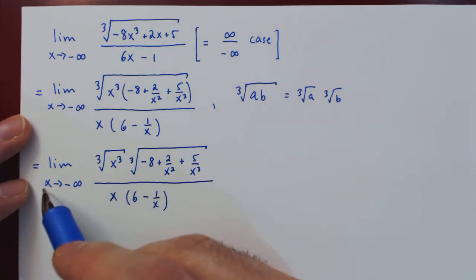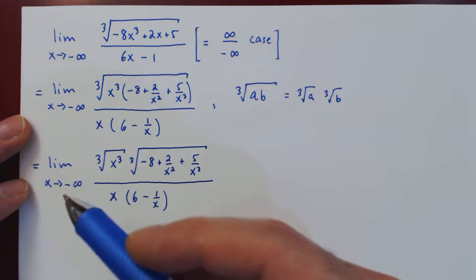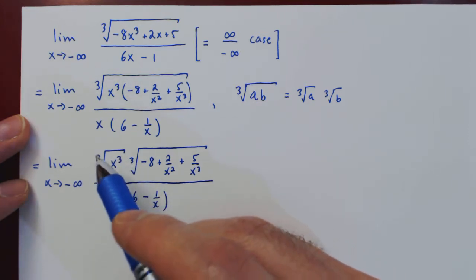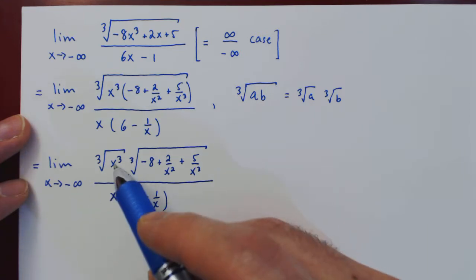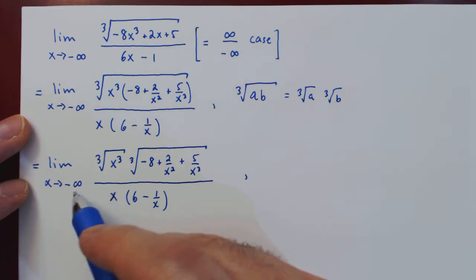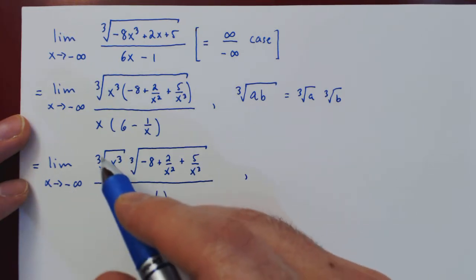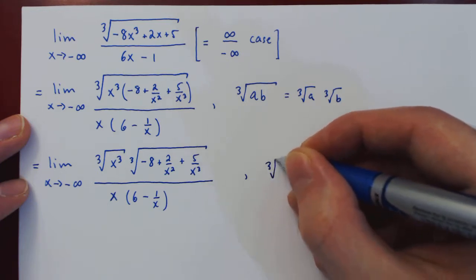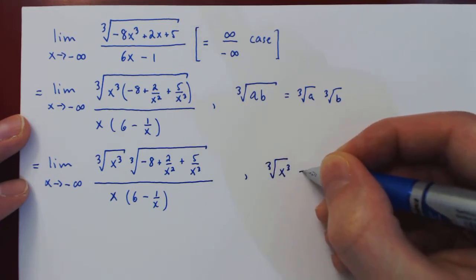And now as x goes to negative infinity, x is negative, but since we have an odd power and the corresponding odd root, then here there is no need for an absolute value. x is negative, x cubed is negative, and the cube root of a negative is negative, therefore the cube root of x cubed is simply x.